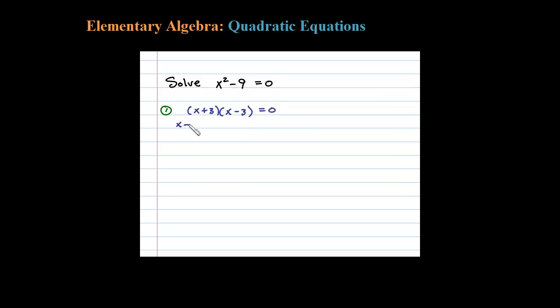Okay, x plus 3 times x minus 3, and then set each factor equal to 0. So this is the familiar way to do it, we've been doing this all along. X equals negative 3 or x equals 3.